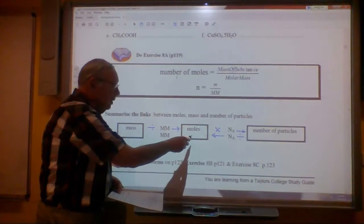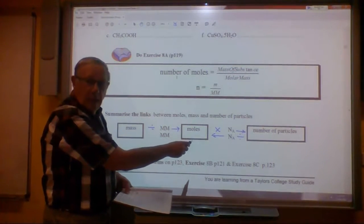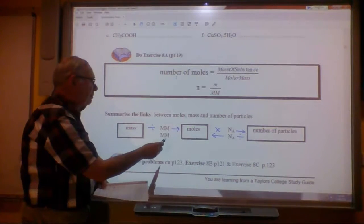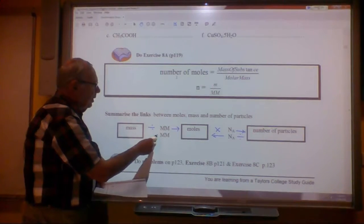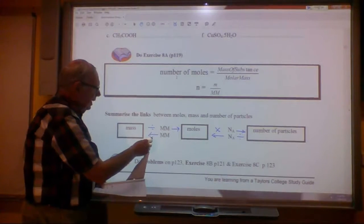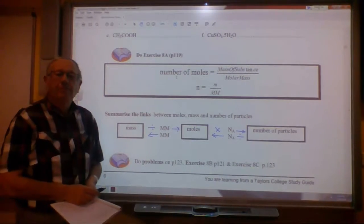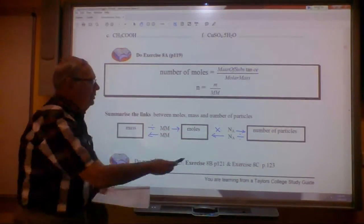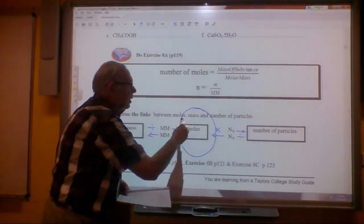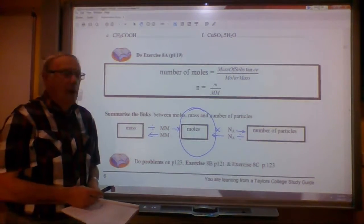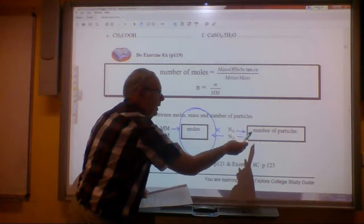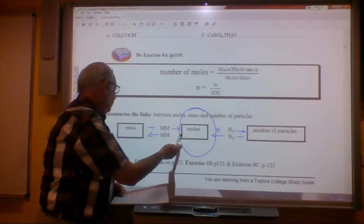If we've got the number of moles, we can then find the mass of those moles. Why? Why simply, or how? By multiplying by the molar mass. And that will produce the mass of this number of particles. Now, notice the central position of moles.